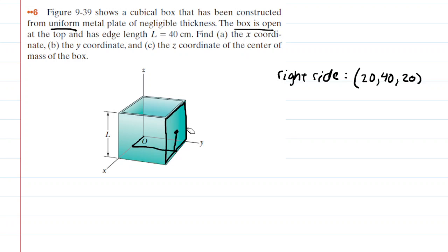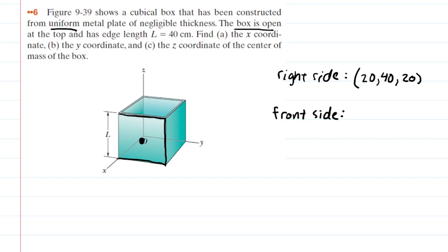We have to do that with the remaining four sides of the box. Remember, the top is open, so we don't have to include it. Looking at the front side, we mark the geometrical center and find its coordinates. Starting at the origin, we go all the way across the X-axis — 40 centimeters — halfway across the Y-axis — 20 centimeters — and then halfway up the Z — another 20. So the coordinates are 40, 20, 20.